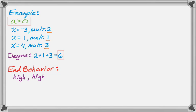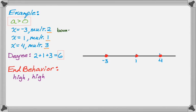Now I'll create my x-axis and put the roots on it: negative 3, 1, and 4, and fill in the zeros. At x equals negative 3, I'm going to get a bounce because the multiplicity is 2. At 1, it's going to shoot straight through because the multiplicity is 1. At 4, it's going to snake its way through. Let's see if we can graph that.